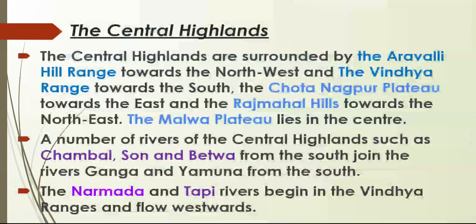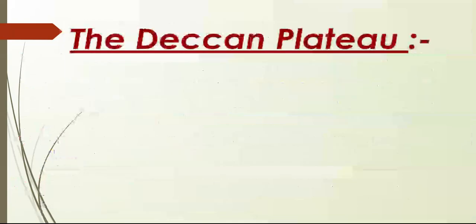The Malwa Plateau lies in the center of the Central Highlands. A number of rivers of the Central Highlands — such as Chambal, Son (note: it's pronounced 'Son', not 'Sun') and Betwa — join the rivers Ganga and Yamuna from the south. Ganga and Yamuna lie in the Northern Plains. The Narmada and Tapi rivers begin in the Vindhya ranges and flow westwards.